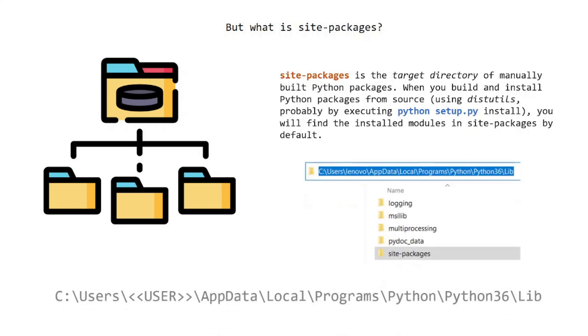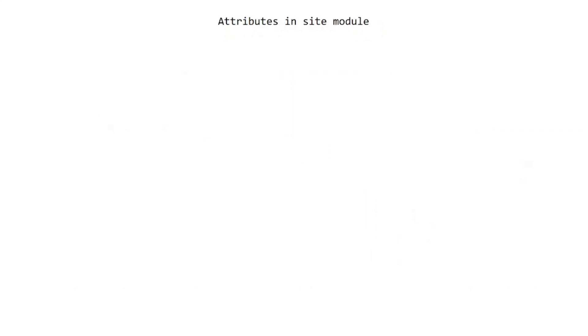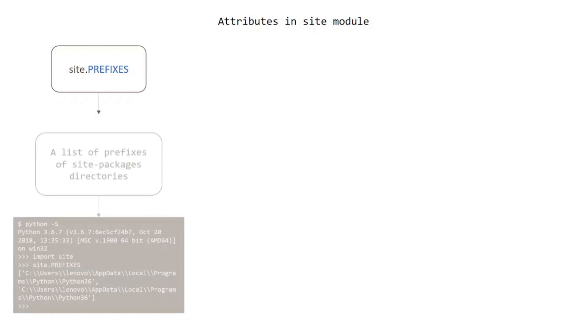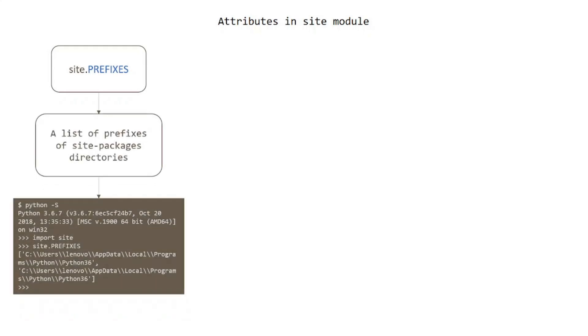The site-packages folder is located on the lib path. Looking at attributes in the site module: the PREFIXES attribute shows a list of prefixes of site-packages directories.